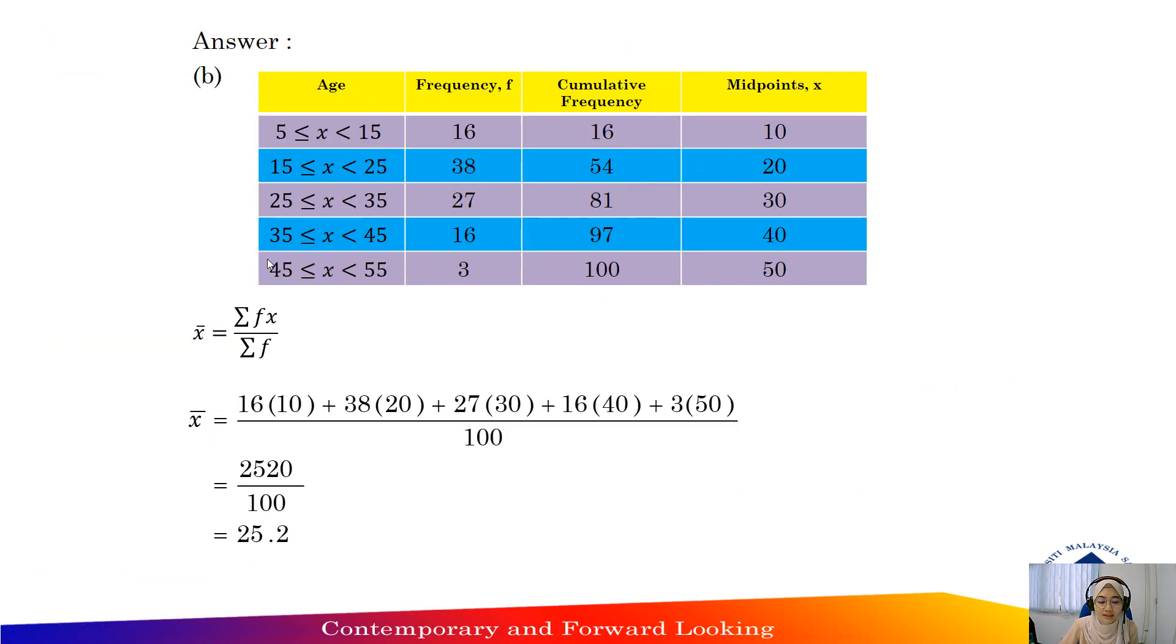Part B: Calculate the mean from the given table. So the formula to find mean, x̄ equals total F times X divided by total F.